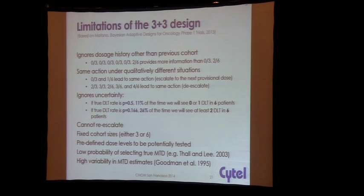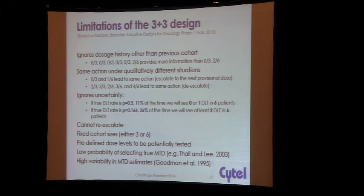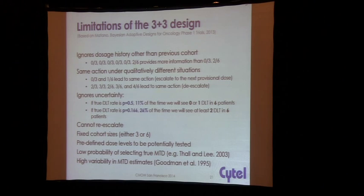Here are some of the limitations of the 3+3. One is that it ignores history — you only look at the last three patients that came in. Seeing 0 out of 3 five times across five cohorts and then seeing 2 out of 6 gives you exactly the same information as seeing 0 out of 3 followed by 2 out of 6. The fact that you didn't see any toxicities leading up to the previous cohort is completely ignored, and that just doesn't seem to make sense.